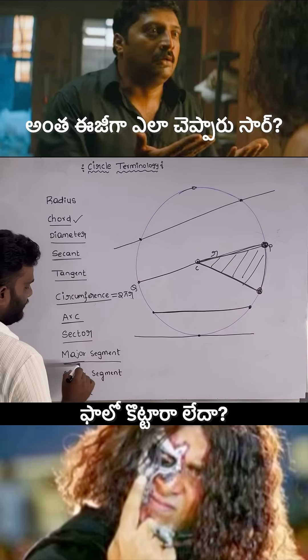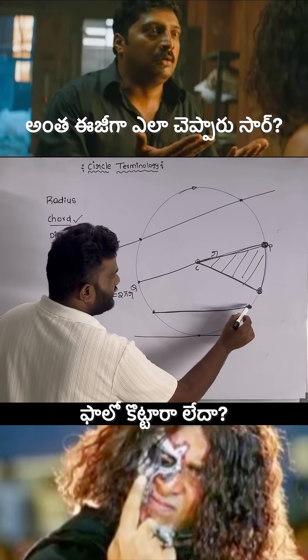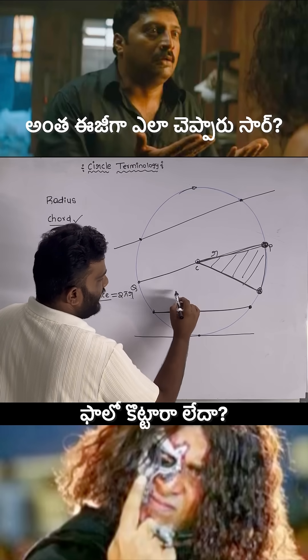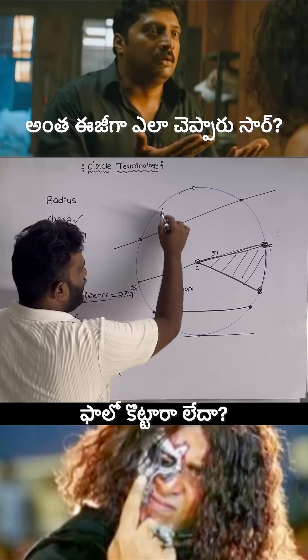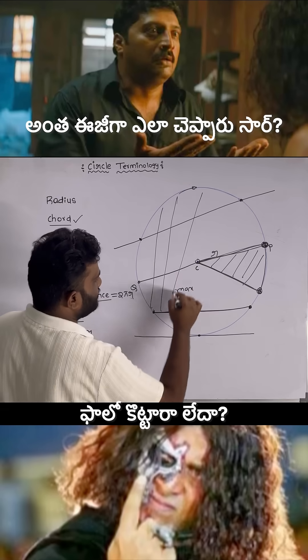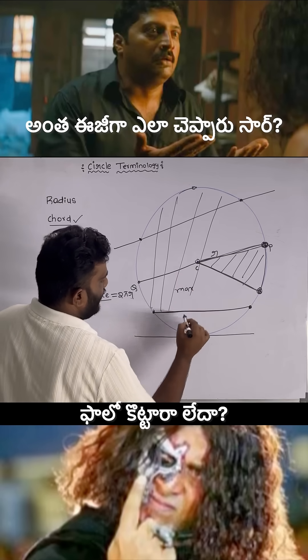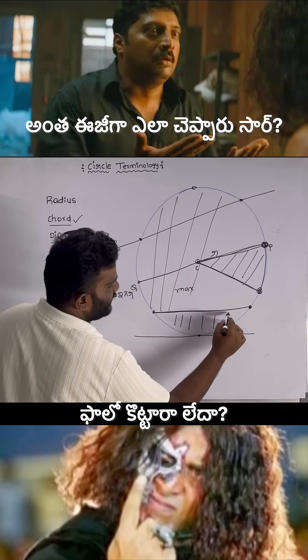What is a major segment? A chord divides the circle into two regions. The maximum region is known as the major segment, and the smallest region is called the minor segment.